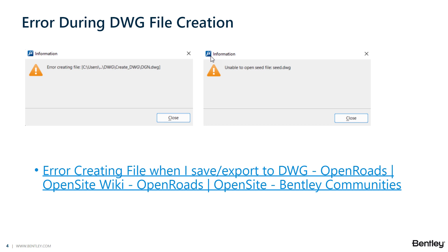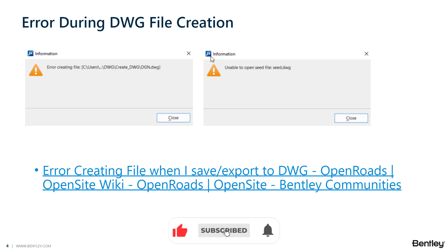In our last presentation, we talked about the difference between saving a DGN file as a DWG, as opposed to exporting to DWG. When you do a Save As, you will actually go from the DGN to the newly created DWG file. Whereas if you export your DGN to DWG format, you will remain in that DGN file and the DWG file will get created separately.